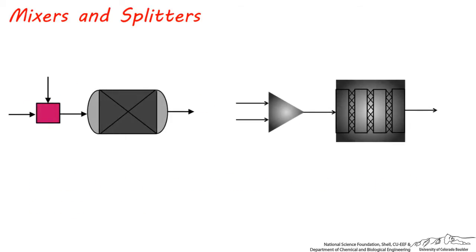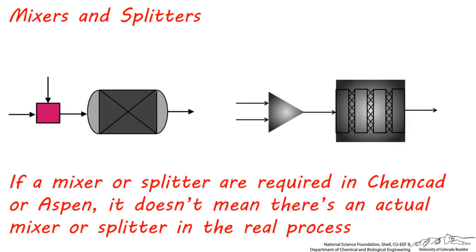So if two or more streams need to be sent to a process unit in ChemCAD or Aspen, a mixer must be used, such as in these examples. What's critical to remember about this is just because you're forced to use a mixer or splitter unit in ChemCAD or in Aspen,